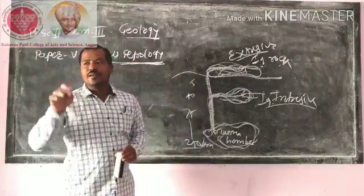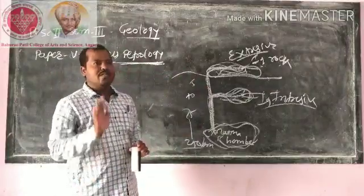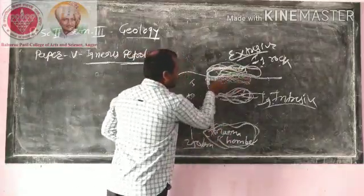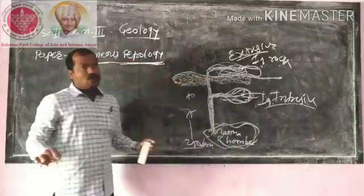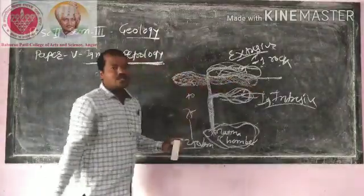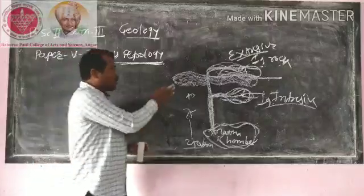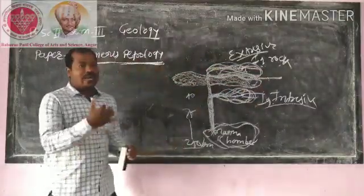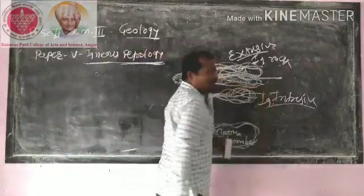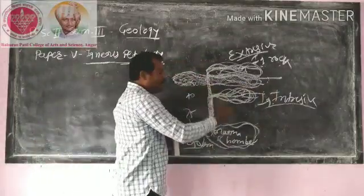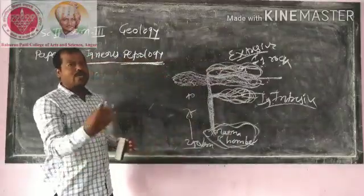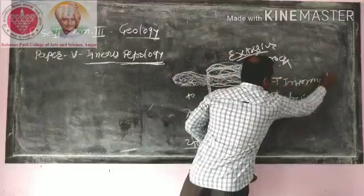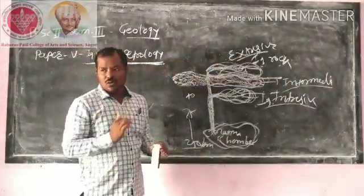The third type of igneous rock is intermediate rock, also called hypabyssal rock. This is present near the earth's surface — magmatic material comes from the magma chamber and is injected near the earth's surface, where it cools. The cooling condition is different from both extrusive and intrusive types. This material is called intermediate or hypabyssal igneous rock. All three types of igneous rock are formed by the process of cooling and consolidation of magma.